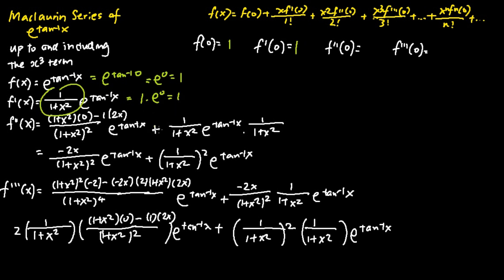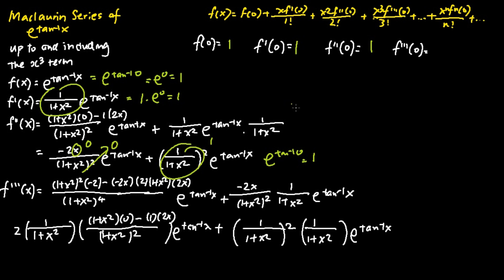For f''(0), substituting x equals 0 into f''(x), the first term is basically 0 because the numerator is 0. For the second part of f''(x), substituting x equals 0 gives us 1, because that part is 1 and e to the power of tangent inverse 0 is 1. Hence f''(0) equals 0 plus 1, which equals 1.